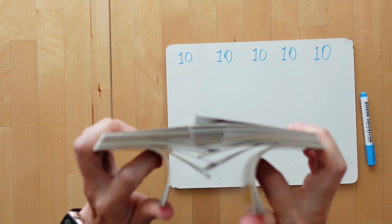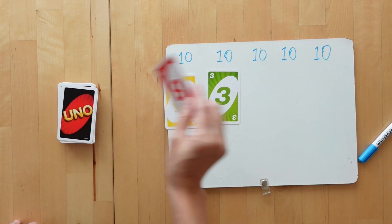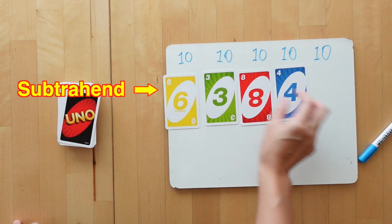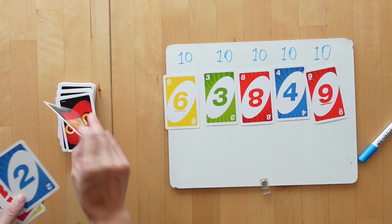You shuffle your deck of cards to form what we call the stockpile and you lay 5 cards from the stock below each 10 like this as the subtraction. Then distribute 4 cards to each player.